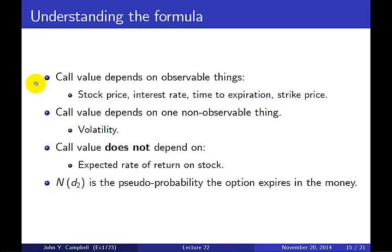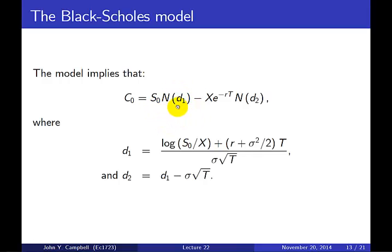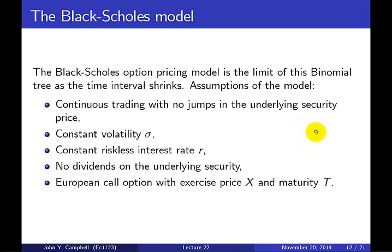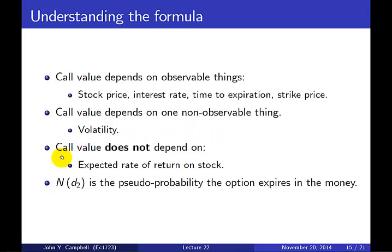The call value depends on several observable things: the stock price, the interest rate, the time to expiration, and the strike price. In addition, the call value depends on something not directly observable — volatility sigma. The call value does not depend on the expected rate of return of the stock, and that's an extremely important point. Finally, N(D2) can be interpreted as the pseudo probability — the risk-neutral probability — that the option expires in the money.